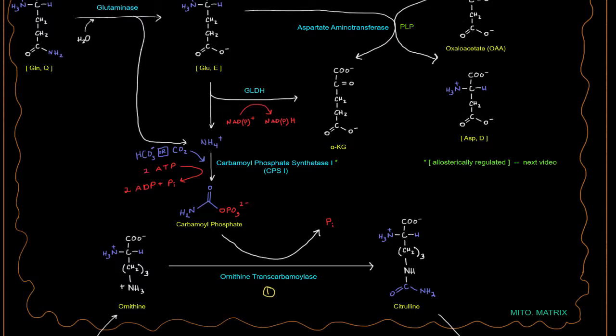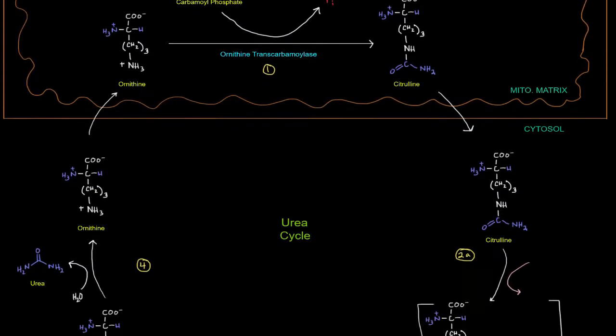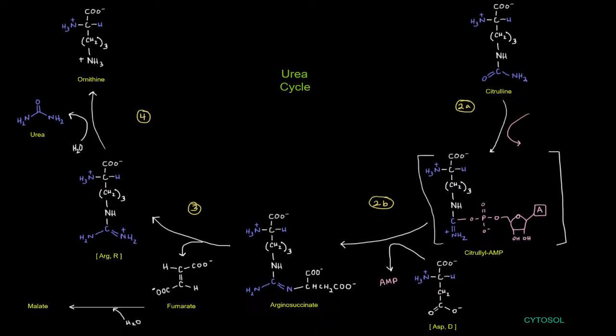Okay. Now, once we have that citrulline, that citrulline is going to exit the mitochondrial matrix out into the cytosol where the rest of the urea cycle will occur.